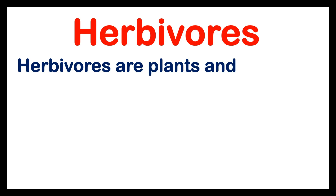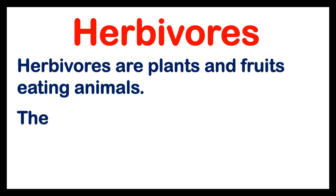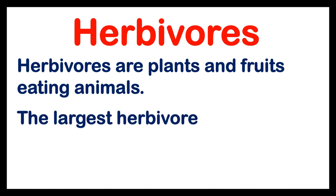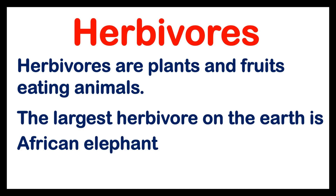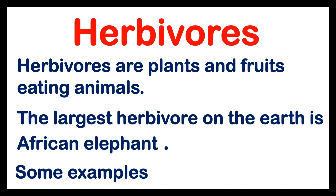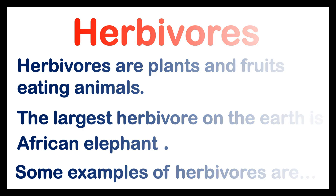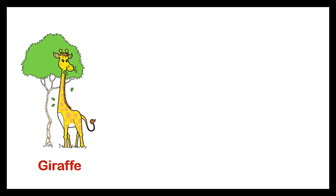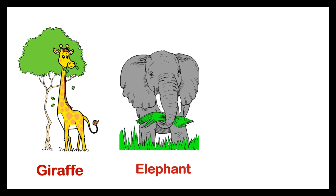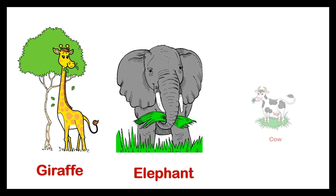Herbivorous are plants and fruits eating animals. The largest herbivorous on the earth is African elephant. Some examples of Herbivorous are Giraffe, Elephant, Cow.